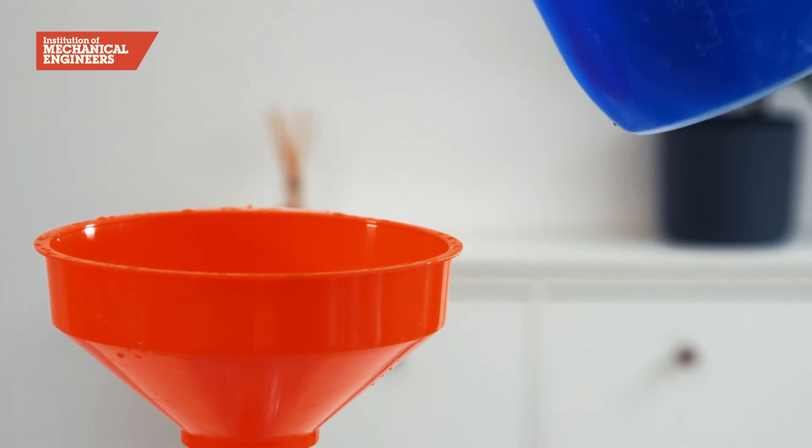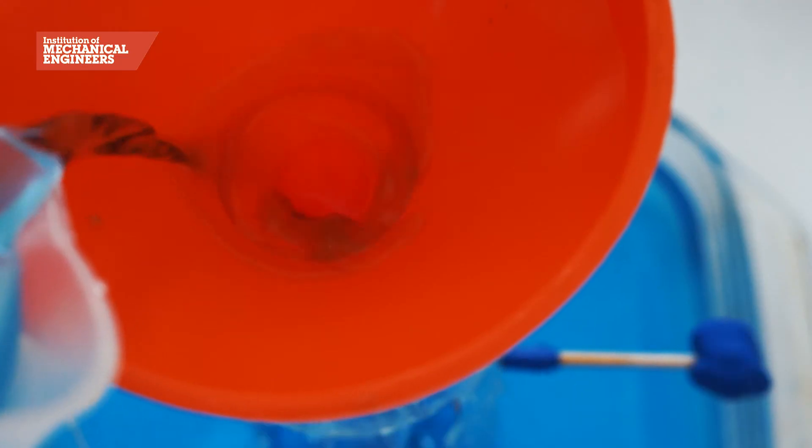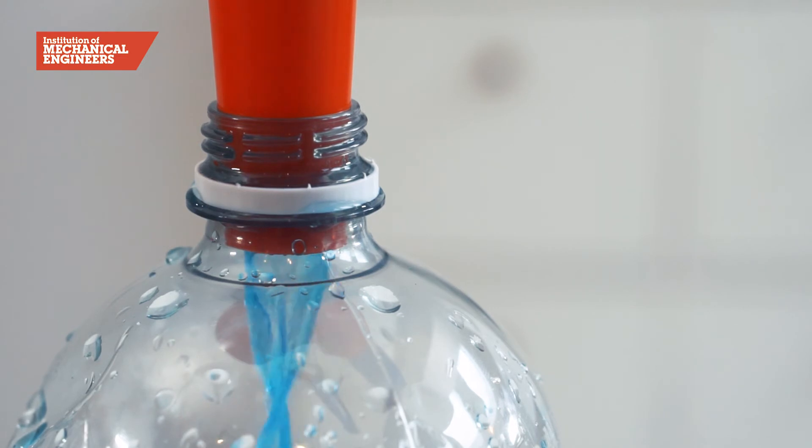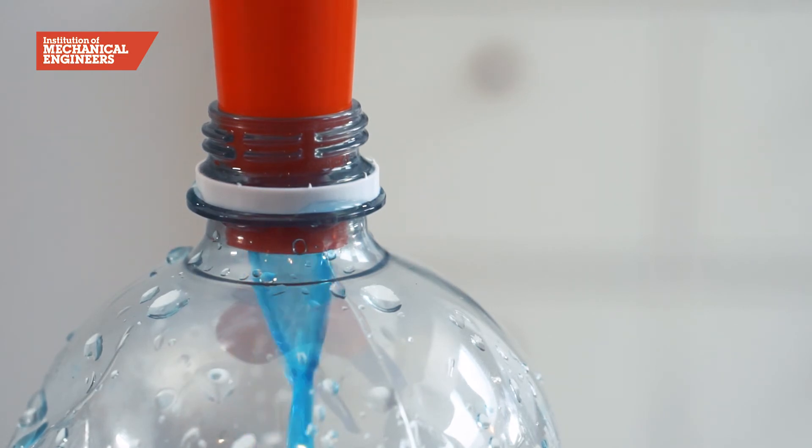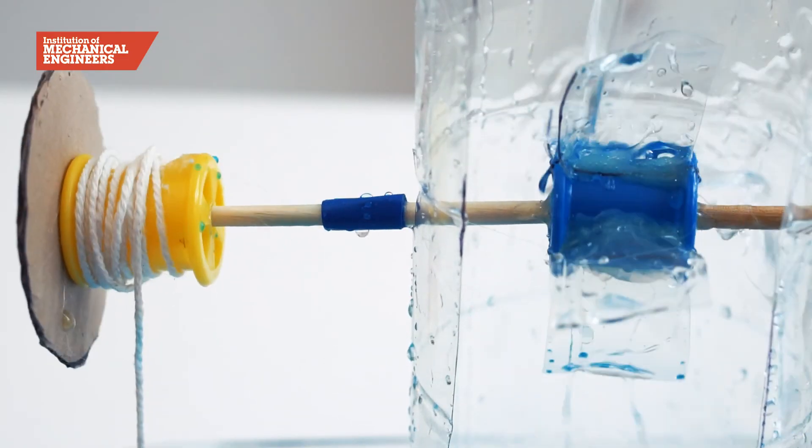This gives your water gravitational potential energy because you have raised it up against the force of gravity. Then pour the water through the funnel, converting the energy to kinetic energy as the water moves. Now watch as the energy from the water makes the turbine blades spin.